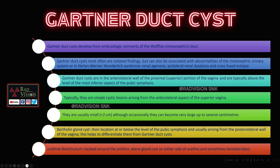We will now look at what is a Gartner duct cyst. Gartner duct cysts develop from embryonic remnants of the Wolffian or mesonephric duct. Gartner ducts often have an association with metanephric abnormalities. Gartner duct cysts are typically located in the upper portion of the vagina and in the anterolateral wall. These are small in size, less than two centimeters, though sometimes they are very large as seen in this case. They may cause compression over the adjacent bladder.